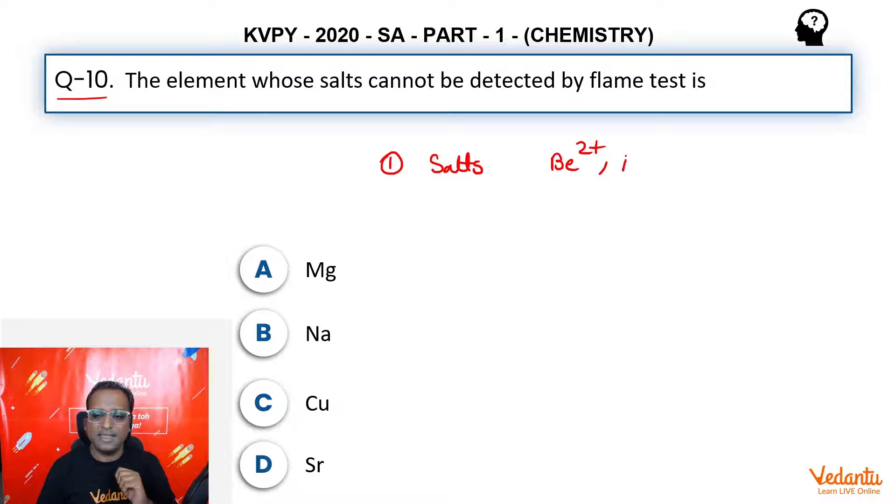beryllium 2 plus and Mg 2 plus in S-block metals, they have very high ionization energy. I'm talking about the ionization energy of beryllium 2 plus and Mg 2 plus, not the metals. These ions themselves in S-block have very high ionization energy and that is why they don't show any color to the flame.